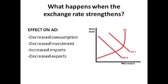What happens when the exchange rate strengthens? The first thing we're going to look at is the effect of a strengthening exchange rate on aggregate demand. A strengthening of the exchange rate leads to a fall in employment, which means that there is a fall in national income. So overall, there's a fall in disposable income, which means that there's decreased consumption. People are spending less because they've got less to spend, so consumption falls.